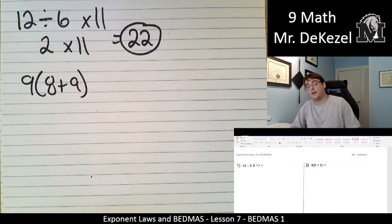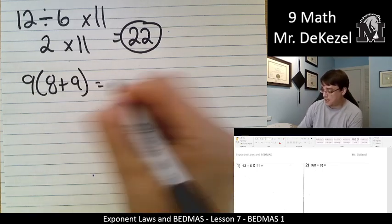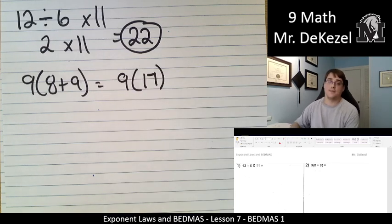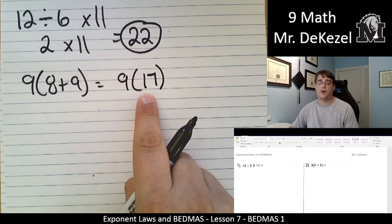9 times 8 plus 9. We go down our hierarchy, we've got brackets. Yes, we do. So we do what's in the brackets first. So this is the same as 9 times 17. And when we have a number right beside a bracket, we multiply those together. So 9 times 17.